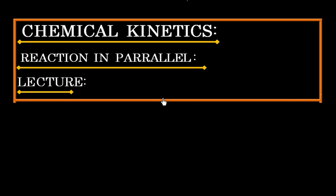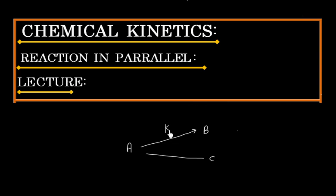In this lecture, we will discuss reactions that occur in parallel. Let us say we have a reactant A, which gives B and C by two parallel paths. The rate constant for the first path is K1, and for the second path is K2. Both follow first order kinetics.